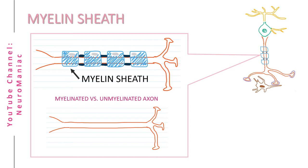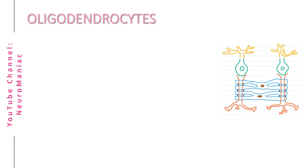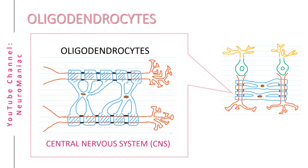In the central nervous system, the myelin sheath is formed by oligodendrocytes. These cells wrap their processes around one or more axonal segments, as shown here. Just take note — oligodendrocytes can wrap around more than one axon at a time.